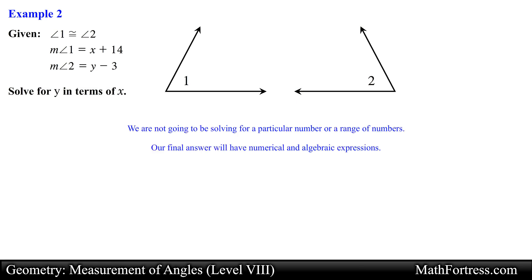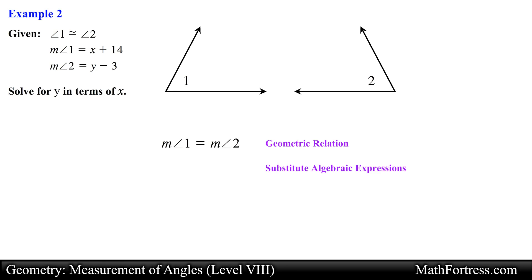We can start by setting up the geometric relations. We know that angle 1 is congruent to angle 2, so we can set the measurement of the angles equal to one another. Next we go ahead and substitute the algebraic relations for each angle. Now it is just a matter of solving for the variable y, so we add 3 to both sides and simplify the expression. In the end, y is equal to x plus 17, and this is our final answer.